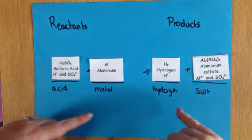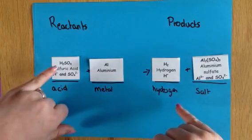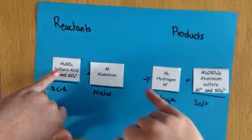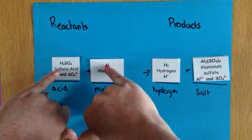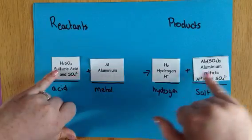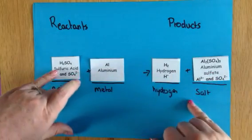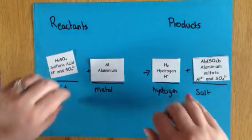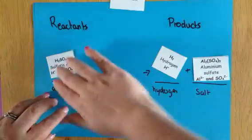Then you just need to look at what's left. After we've taken hydrogen out, we have aluminium left and we have sulphate left. So the products are aluminium sulphate.